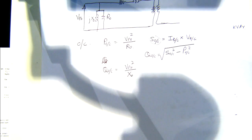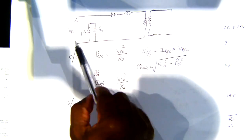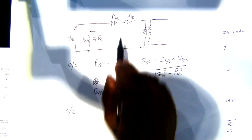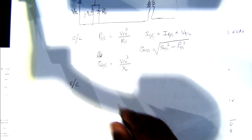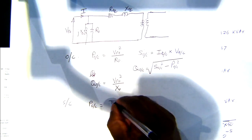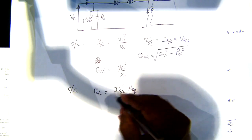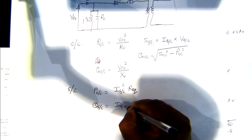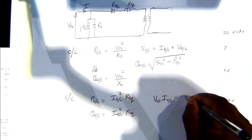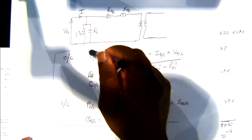For the short circuit test, we short-circuit the secondary. This results in high current, so we neglect the shunt circuit. P_SC equals I_SC squared times R_eq, which gives the real power measurement. Reactive power corresponds to I_SC squared times X_eq. And the applied voltage times short circuit current gives you the apparent power.